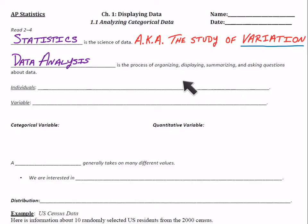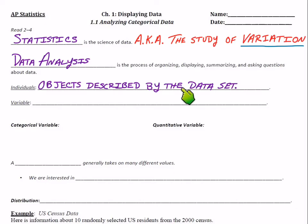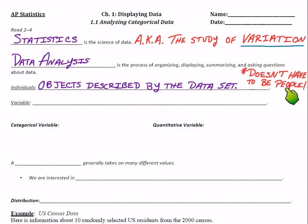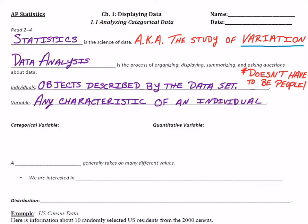A couple of our first vocab terms: individuals — those are objects described by the data set. A lot of times you think of individuals as being people, but they certainly don't have to be. Whatever the objects in the data set are, we refer to those as the individuals. Variable is the next piece — that's any characteristic we want to observe about the individual.